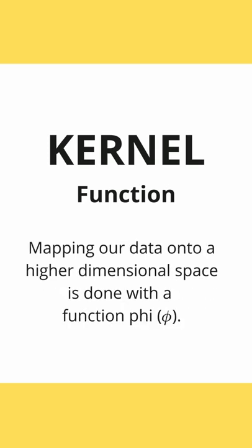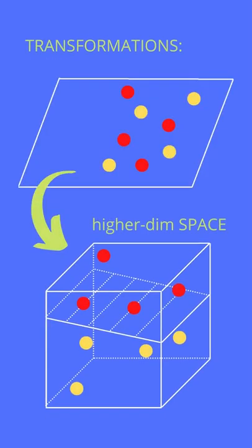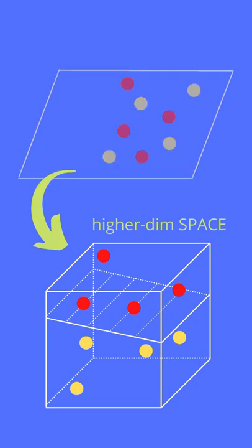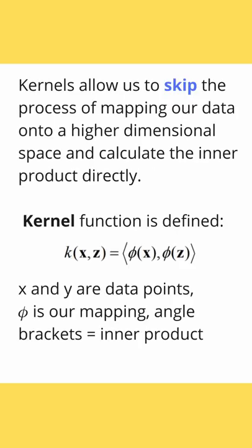I show you a visualization from a two-dimensional space to a three-dimensional feature space, where we have a hyperplane that provides a linear decision boundary. Of course, a kernel is defined in the following way.